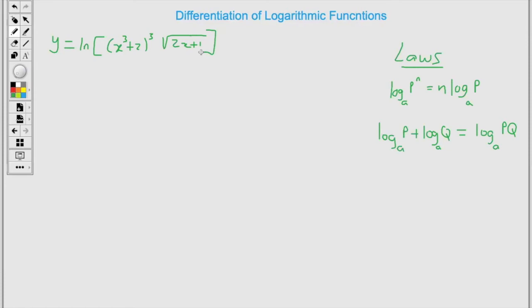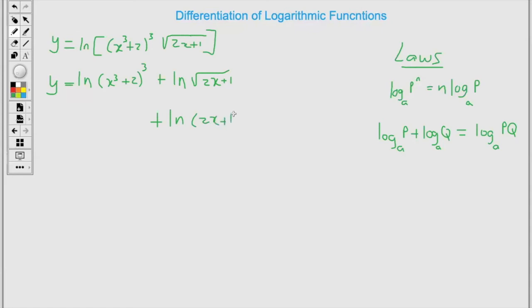For the next example, we're going to apply the rule that says when we multiply, we add. So here we have a product, so we can rewrite it as a sum, and we also have powers that we can bring to the front by applying rule number 1. Applying the rule where we rewrite a product as a sum, we have ln of (x cubed plus 2) all raised to the power 3, plus ln of (x cubed plus 1). Now the square root is the same thing as the power 1 half, so we rewrite it as 2x plus 1 raised to the power 1 half.